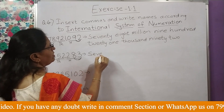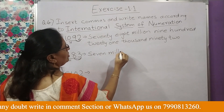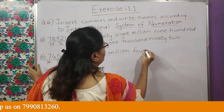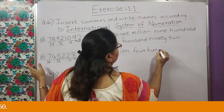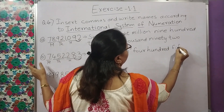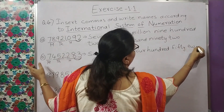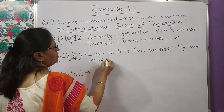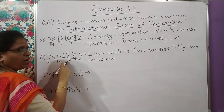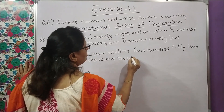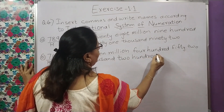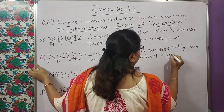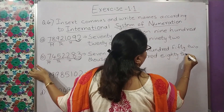Hum likhenge: seven million, four hundred fifty-two thousand, two hundred eighty-three.